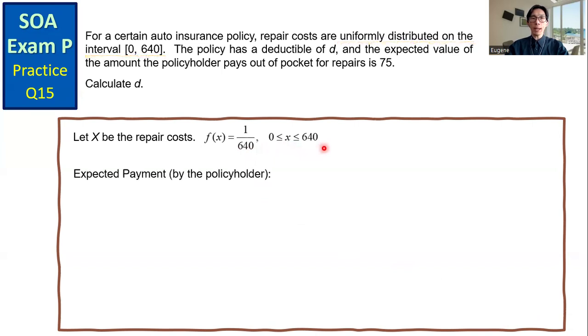Now the expected payment by the policyholder. We need to get the expected value of the amount the policyholder pays out of pocket. Define the payment as Y, and this policy has a deductible of D. So if the repair cost is less than the deductible D, the policyholder needs to pay the full amount X. And if the repair cost is greater than the deductible D, then the policyholder only needs to pay D dollars.